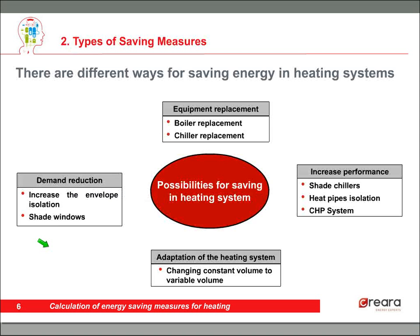Types of saving measures. We have divided all energy saving measures into four sections: demand reduction — for example, increasing envelope insulation, especially windows — equipment replacement, such as boiler replacement, chiller replacement, or LED replacement.